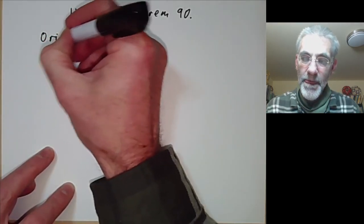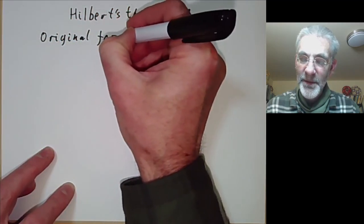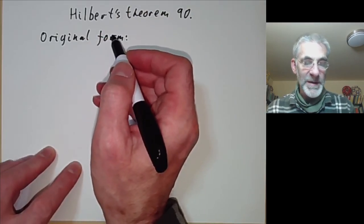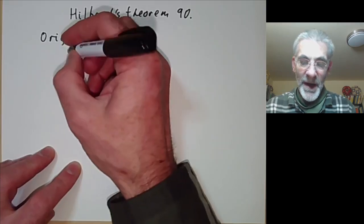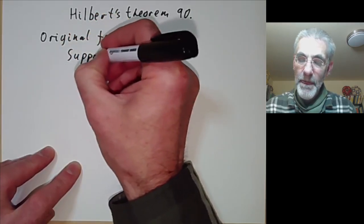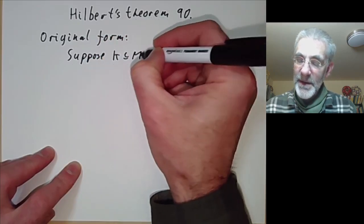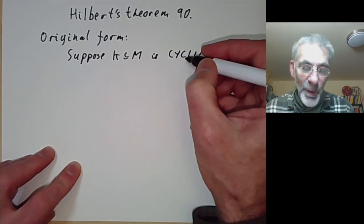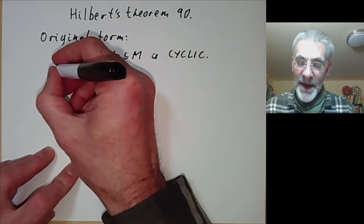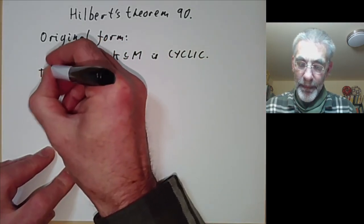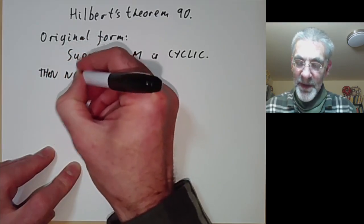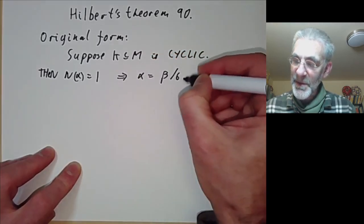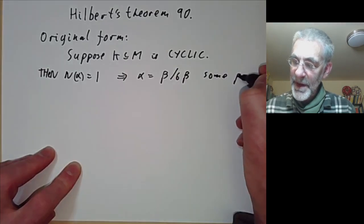The original form of Hilbert's Theorem — as opposed to the more general form due to Noether which we'll talk about later — says the following: suppose K contained in M is cyclic, meaning the Galois group is cyclic. Then if the norm of alpha is equal to 1, this implies alpha equals beta over sigma of beta for some beta.